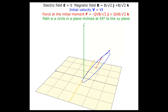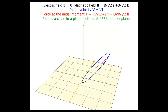The center of this circle is determined by knowing the cross product of velocity at a given position and the magnetic field vectors. This cross product is directed towards the center of the circle from the given position for a positively charged particle.